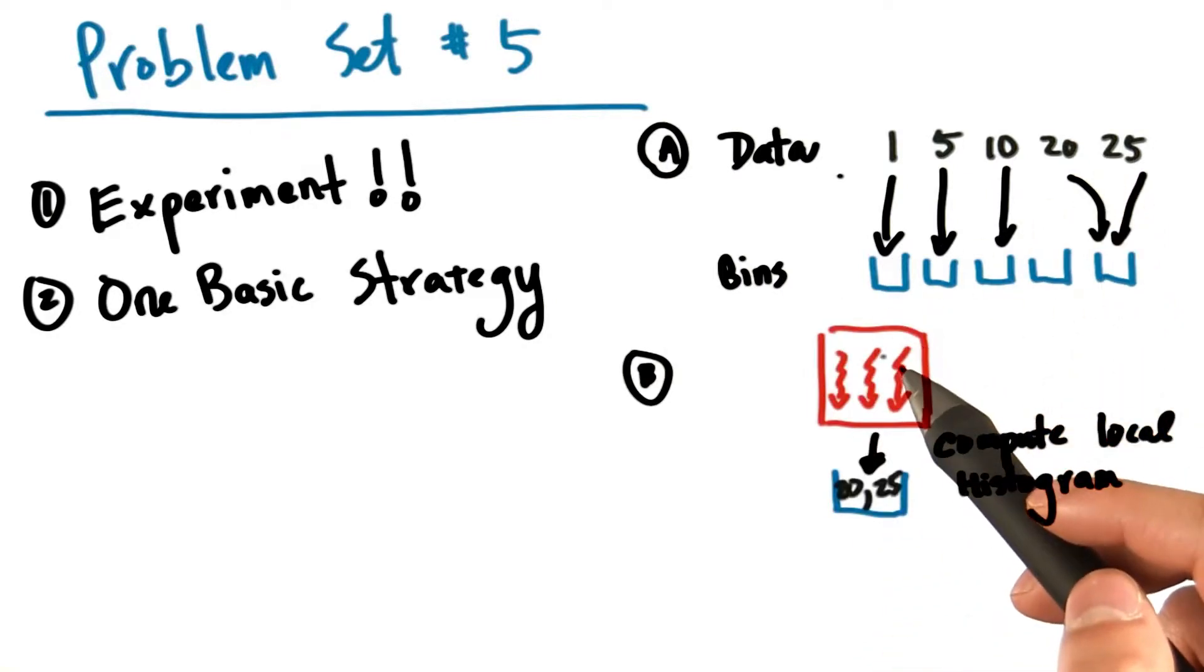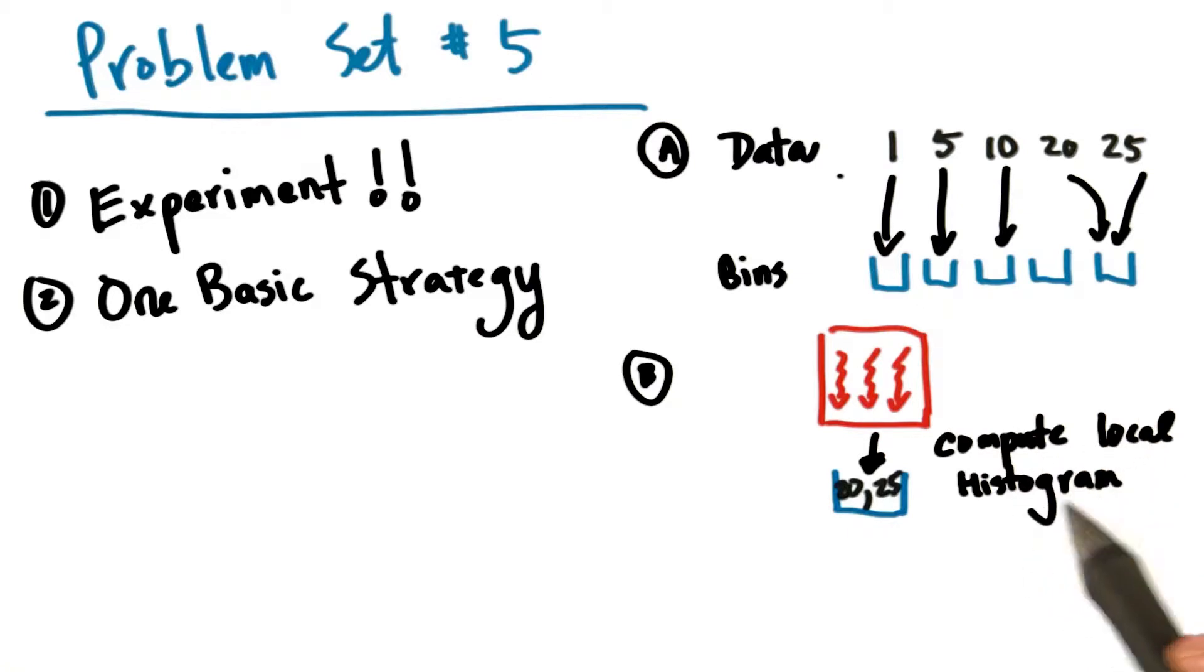Two, use each thread block to compute a local histogram for the data that falls into a single coarse bin. Three, concatenate each of the coarse histograms together.